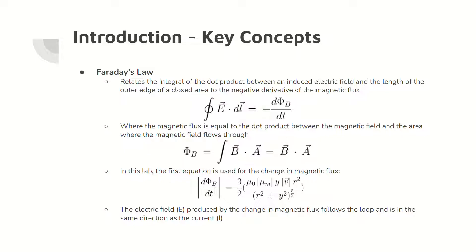For this lab, the third equation, which is a general equation, is used to define the change in magnetic flux. The electric field produced follows the same direction as the current induced in the length of the closed area, which in this lab is a loop.